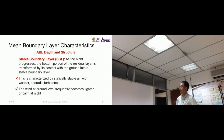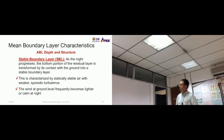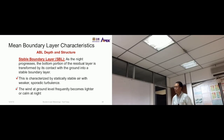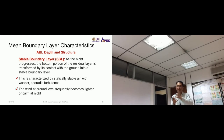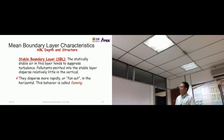Now, the stable boundary layer. As the night progresses, the bottom portion of the residual layer is transformed by contact with the ground into a stable boundary layer, characterized by statically stable air with weaker, sporadic turbulence. Wind at ground level frequently becomes lighter or calm at night. Air pollutants dispersed into the stable boundary layer do not disperse well and become concentrated at a certain layer.